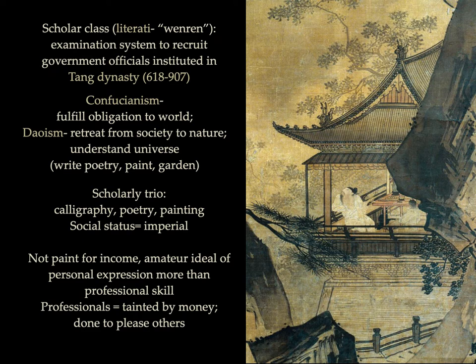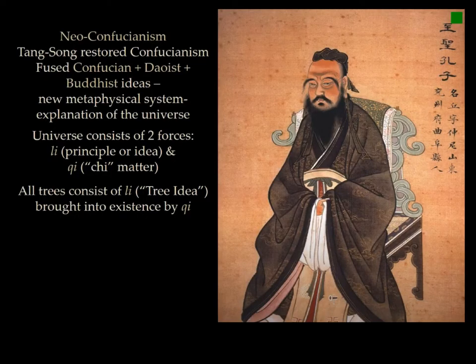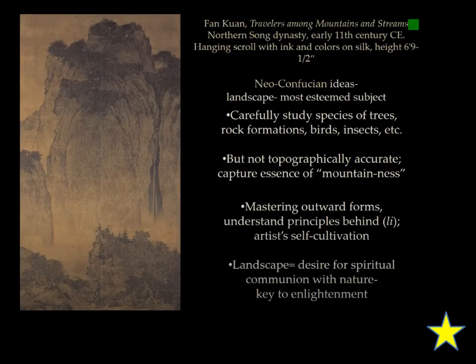The scholarly trio of production was calligraphy, poetry, and painting, related to the imperial status of court. The belief is that professionals are tainted by money and the desire to please others, which makes genuine artistic expression less important. All these ideas were brought together in a new form known as Neo-Confucianism. In the hanging scroll titled Travelers Among Mountains and Streams, we see an example of Neo-Confucianist ideas represented specifically in the landscape, which was the most esteemed subject. Symbolism can be seen in landscapes. What we do not see are religious figures or the supernatural realm.